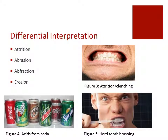Four different interpretations you could have are attrition, abrasion, abfraction, and erosion. Attrition is the tooth-to-tooth friction that leads to wear of the teeth, usually associated with a flattening of the plane of occlusion or the incisal surface. Abrasion is the friction between a tooth and an outside agent, typically dentifrice, and is associated with multiple teeth with lesions typically on the buccal surfaces due to excessive hard brushing.